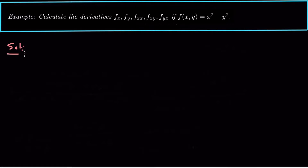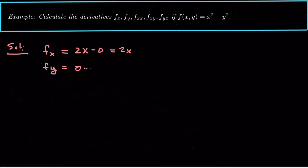Let's look at an example. Calculate the partial derivatives f sub x, f sub y, f sub xx, f sub xy, and f sub yx for the function f(x, y) = x² − y². For f sub x, we treat y like a constant, so the derivative is 2x − 0, or just 2x. For f sub y, we treat x like a constant, so the derivative is 0 − 2y, which is −2y.